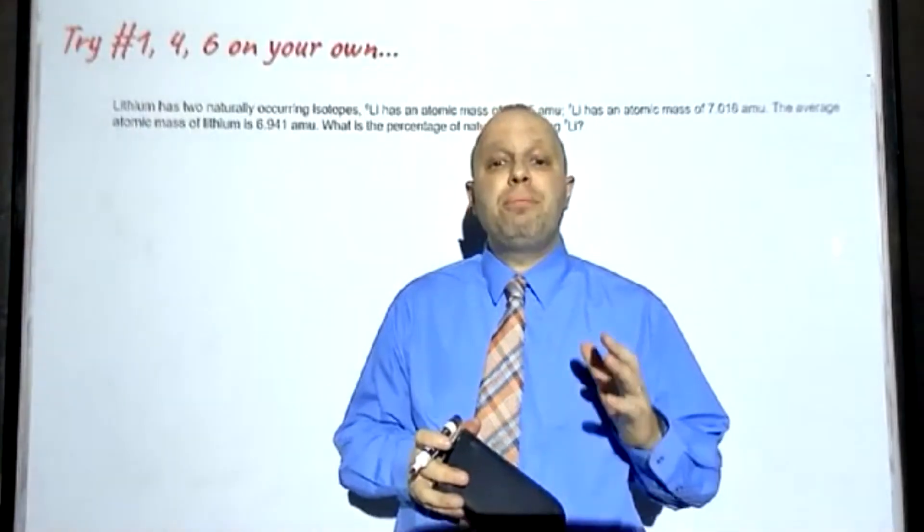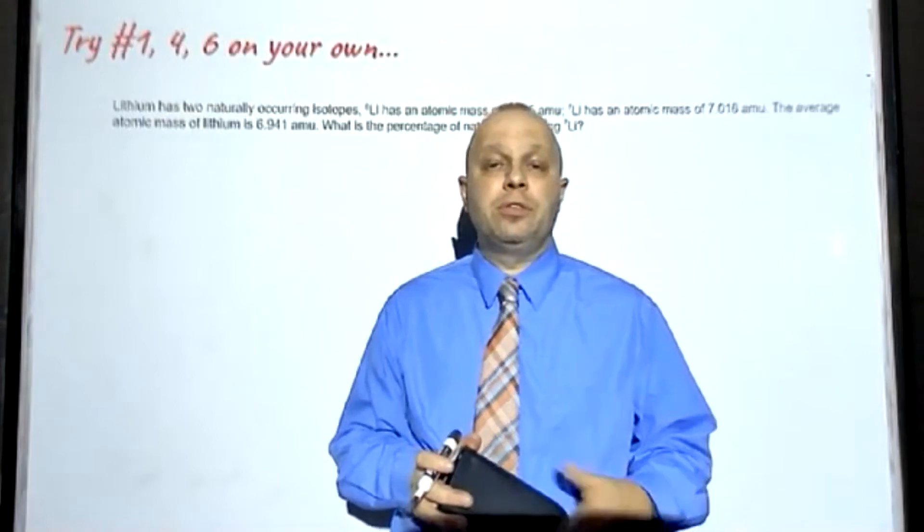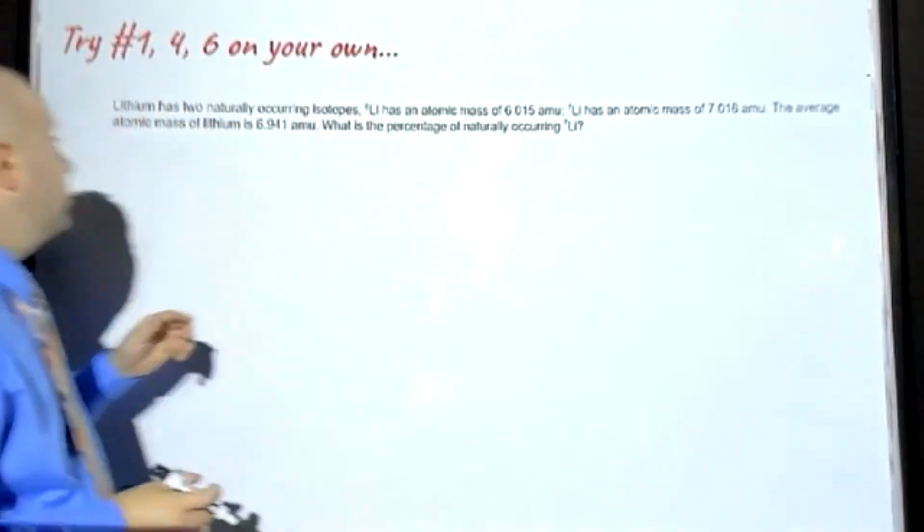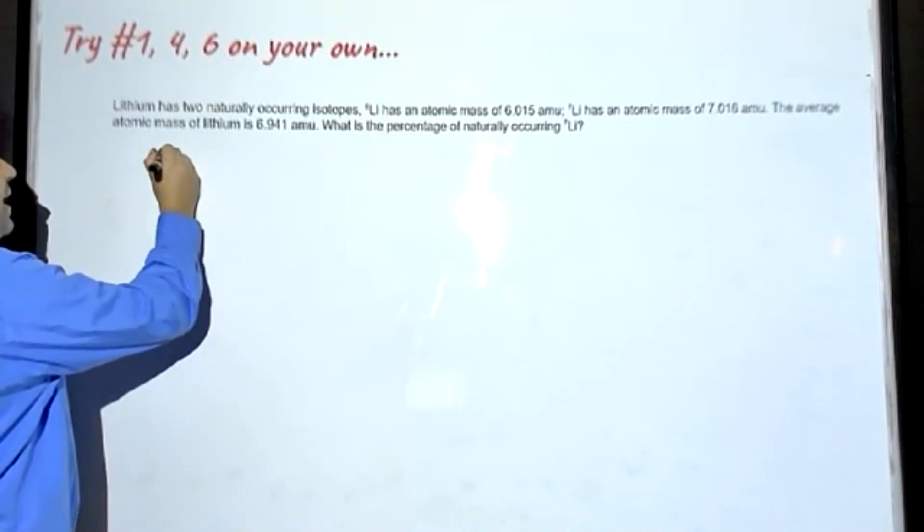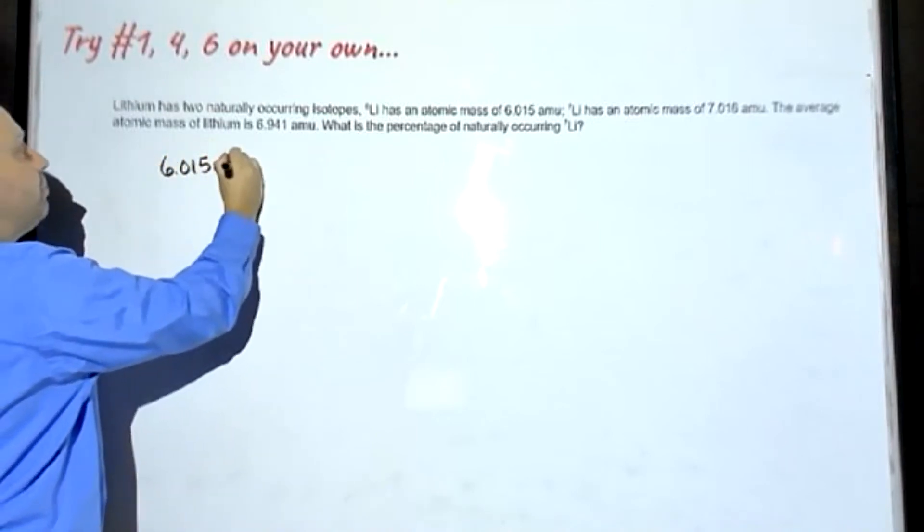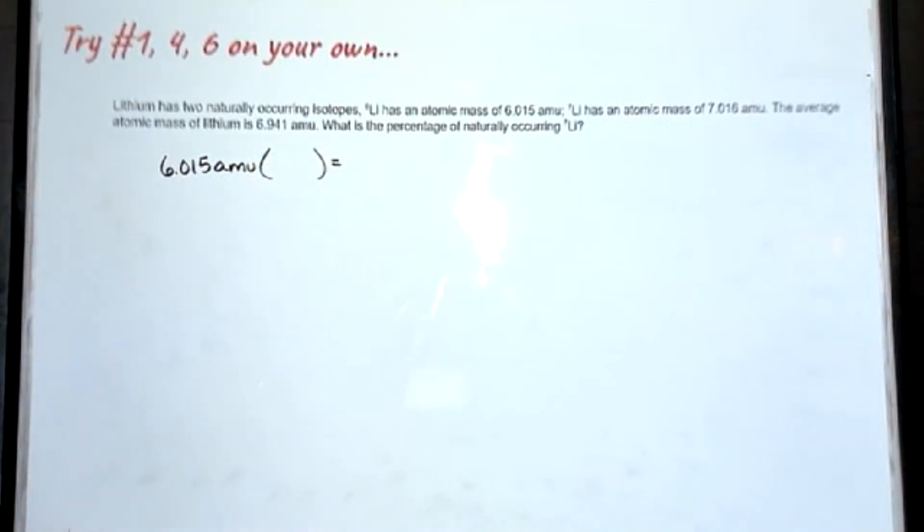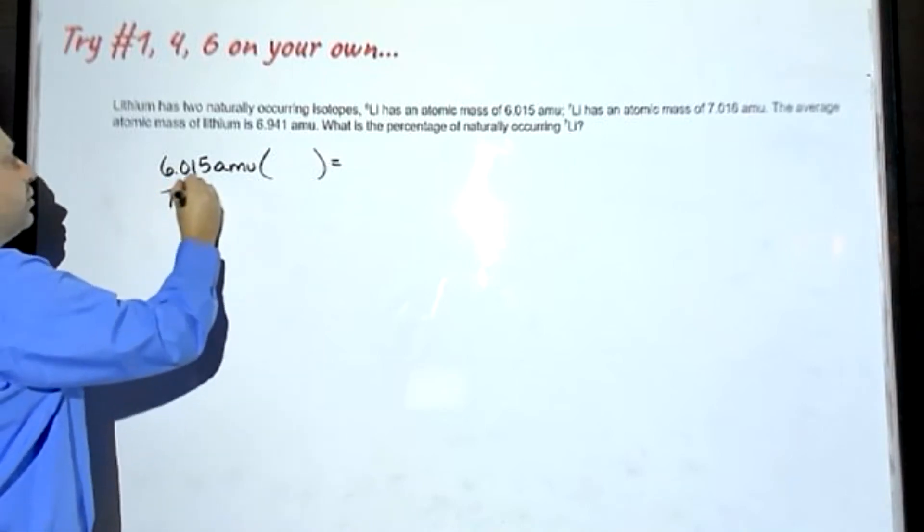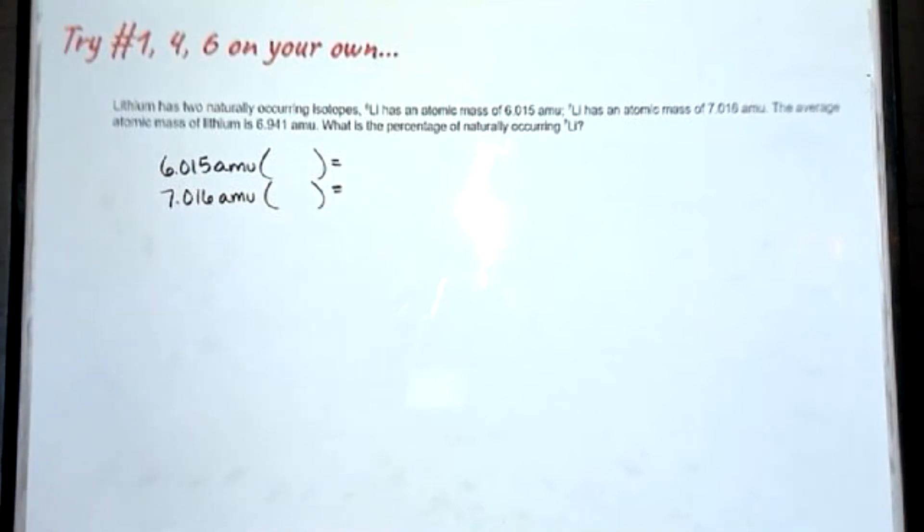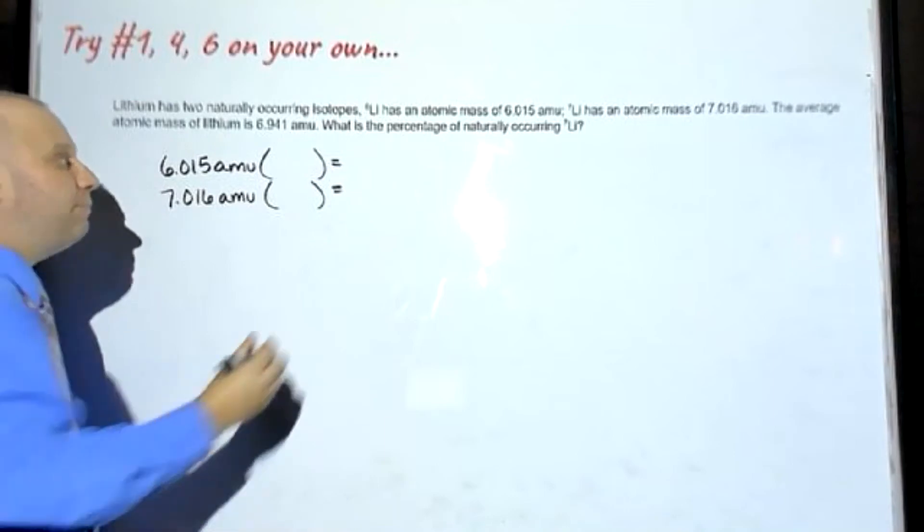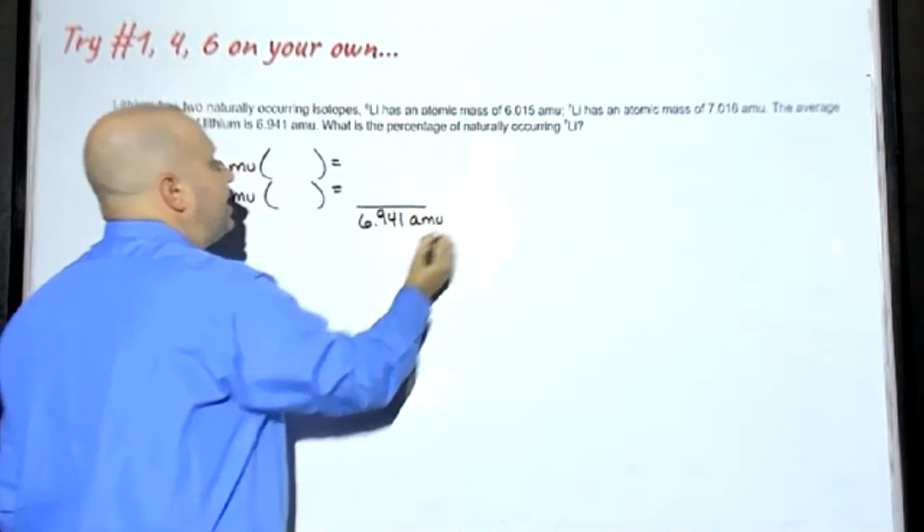The last problem, problem number 6, is intended as practice for our accelerated honors students. So let's take a look at problem number 6. Lithium has two naturally occurring isotopes. One with a mass of 6.015 AMU and a second with a mass of 7.016 AMU.